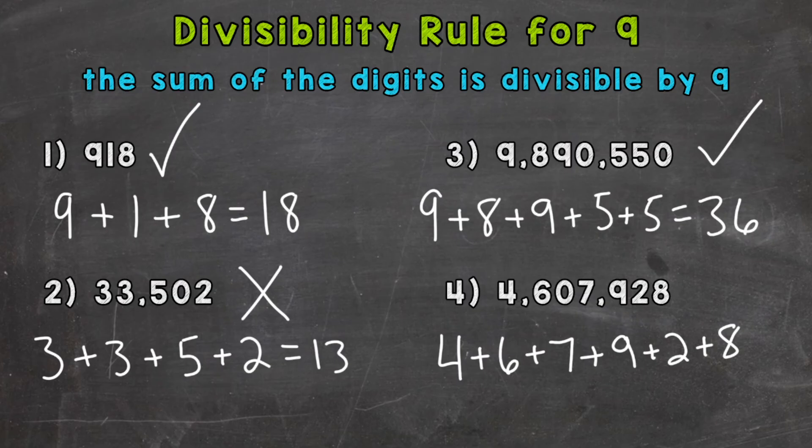So 4 plus 6 is 10 plus 7 is 17 plus 9 is 26 plus 2 is 28 plus 8. And we get a 36 just like number 3 there. So we know 36 is divisible by 9. Therefore, 4,607,928 is divisible by 9 as well.